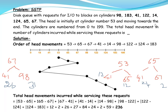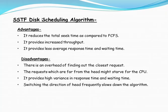Now we discuss the advantages and disadvantages of this algorithm. The advantages are: it reduces the total seek time compared to the FCFS algorithm, because it processes only the closest request without unnecessary deviations. It also provides increased throughput — the total number of requests processed per second is high — and it provides less average response time as well as waiting time.